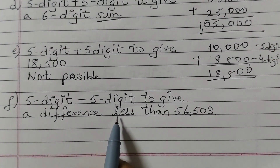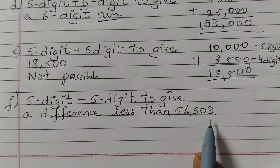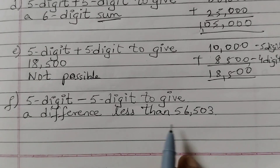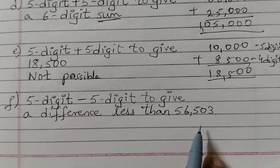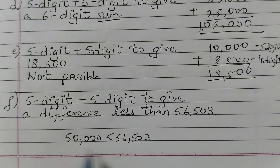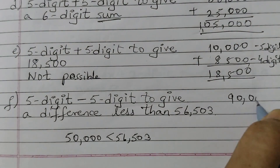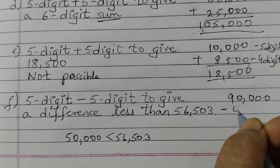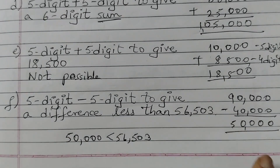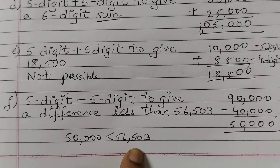Next: 5 digit minus 5 digit — subtraction — to give a difference less than 56,503. We need to subtract two 5-digit numbers so that the difference is less than 56,503. Let's say we want to get 50,000, which is less than 56,503. We can do 90,000 minus 40,000 — both 5-digit numbers — and we get 50,000, which is less than 56,503. You can take your own examples; there is no fixed answer.